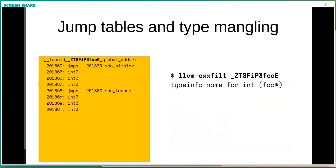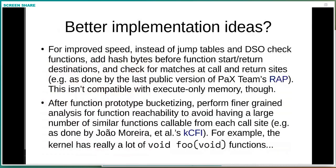Are there better implementations than this? Two worth mentioning. For improved speed, instead of jump tables and range checks, you can actually use hash bytes before function start and return destinations — this is what PAX Team's RAP does. But this isn't ultimately compatible with execute-only memory, because that code stream is actually trying to read the hashes out of the text segment. Once we have CPUs where we can do execute-only memory — where attackers are not reading back the kernel to find gadgets — that approach doesn't really work. Combining these mitigations makes them quite a bit more powerful.